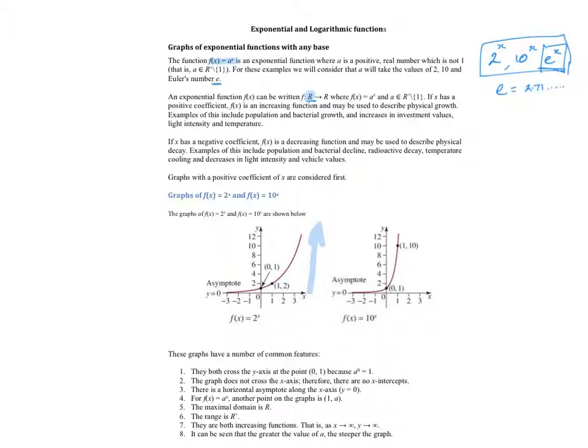If you look at the difference between 2^x and 10^x, the 10^x graph gets steeper a lot more quickly. Which makes sense: 2² is 4, 10² is 100; 2³ is 8, 10³ is 1,000. So 10^x gets big very quickly. In fact, most exponential graphs do get big very quickly.